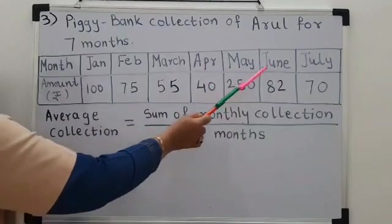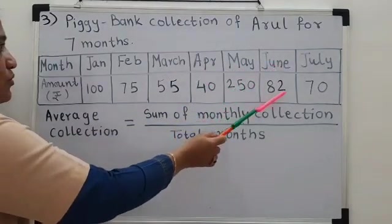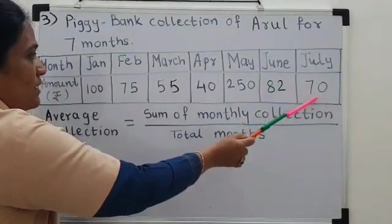In June, it was Rs. 82. And in July, it was Rs. 70.